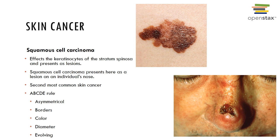Squamous cell carcinoma occurs in the stratum spinosum. The keratinocyte cells produce scaly patches that can be found on the lower lip, ears, scalp, and hands. It does have a faster metastasis but is still very easily treated when caught early. It has a very good prognosis if treated by radiation therapy or removed surgically.